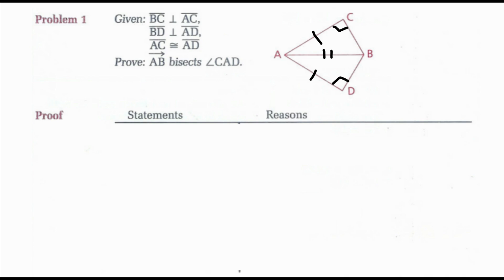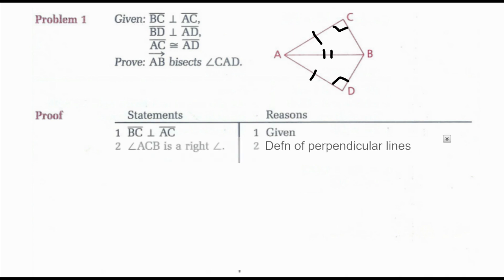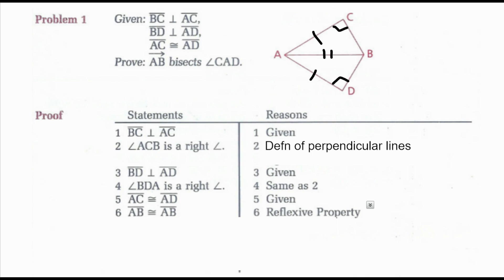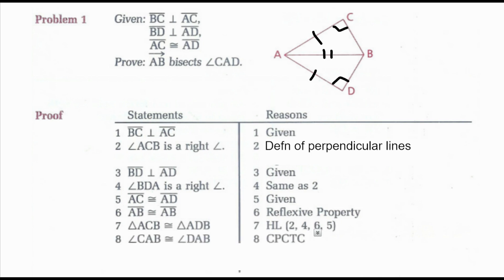Now listing this in my proof: I would have my first given of segment BC perpendicular to segment AC. Then angle C, or angle ACB, is a right angle by the definition of perpendicular lines. Then my next given of segment BD is perpendicular to segment AD, so angle D, or angle BDA, is a right angle. AC is congruent to AD — that was given. Then segment AB is congruent to segment AB by the reflexive property. Triangle ACB is congruent to triangle ADB by the hypotenuse leg postulate. Angle CAB is congruent to angle DAB by CPCTC. Then ray AB bisects angle CAD by the definition of angle bisector.